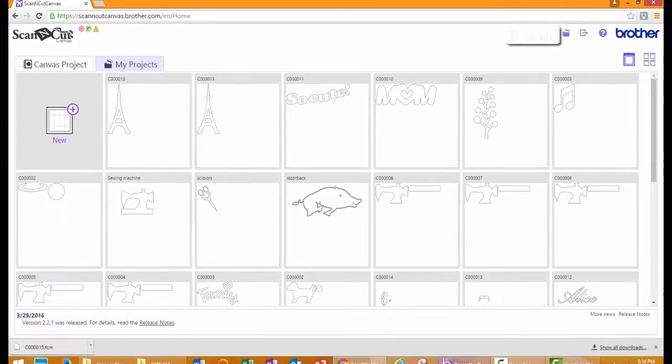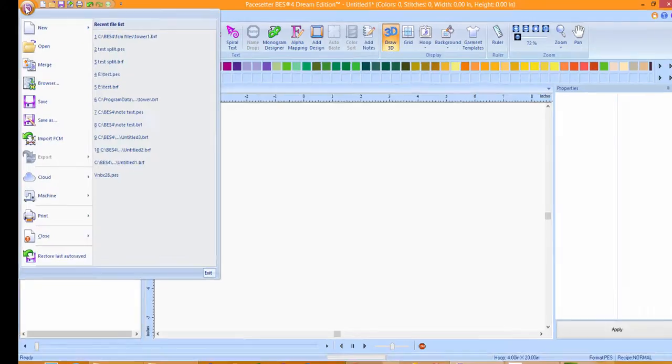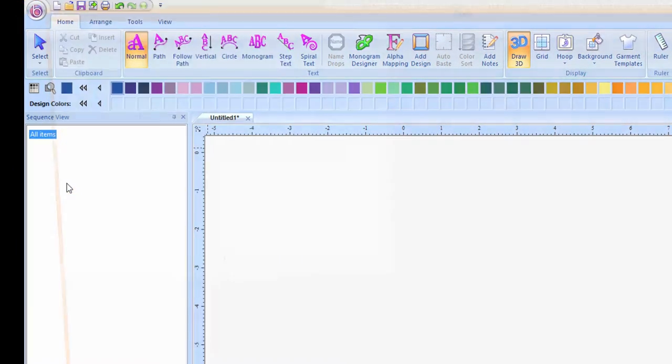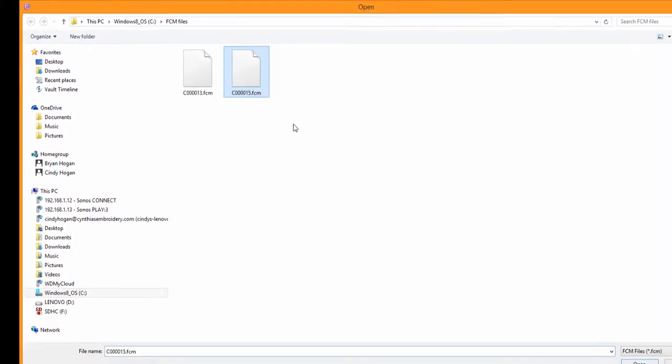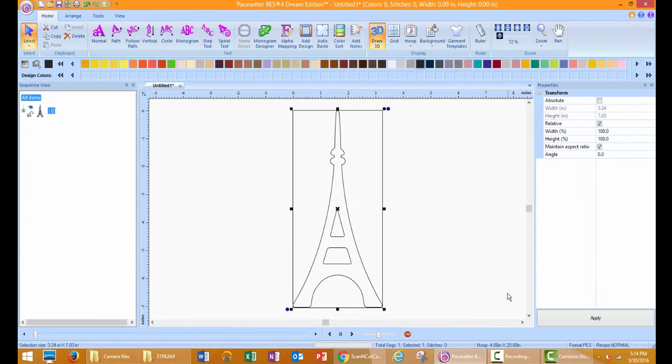And then let's go to our BES4 software. From the Paste Setter pull-down menu, choose Import FCM. Choose the FCM file that you downloaded and press Open.